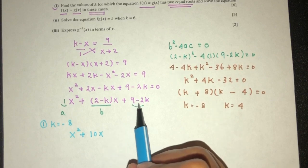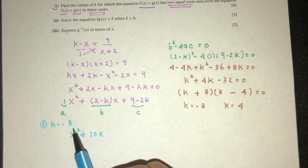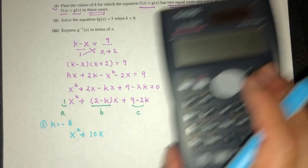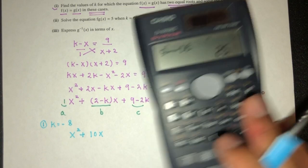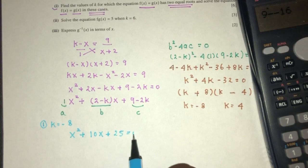That should be 9 - 2k. So 2 times -8 should be -16. So 9 - (-16) should be 25, equal to 0.